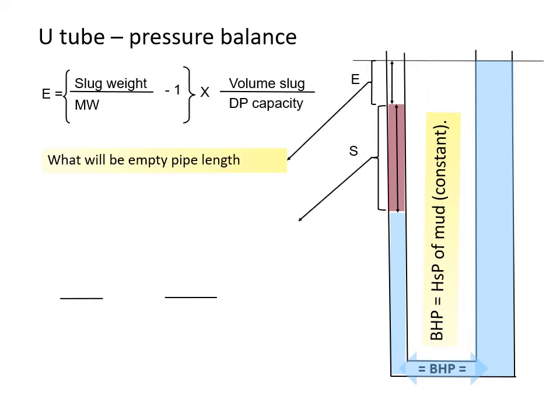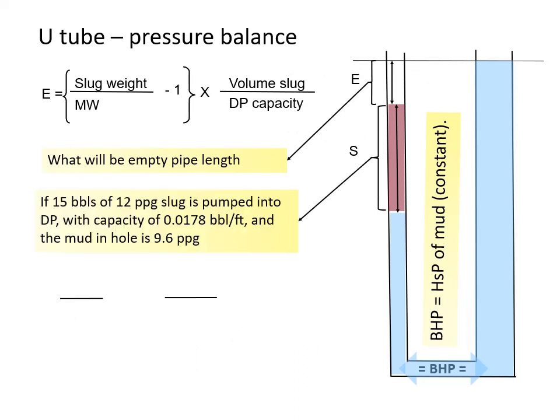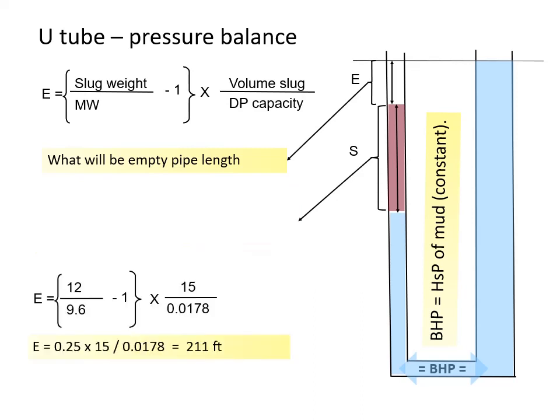What will be empty pipe length? If 15 barrels of 12 ppg slug is pumped into DP with capacity of 0.0178 barrels per foot, and the mud in hole is 9.6 ppg. Length of empty pipe E will be equal to 12 over 9.6 minus 1, multiplied by 15 over 0.0178. 0.25 multiplied by 15 divided by 0.0178, so E is equal to 211 feet.